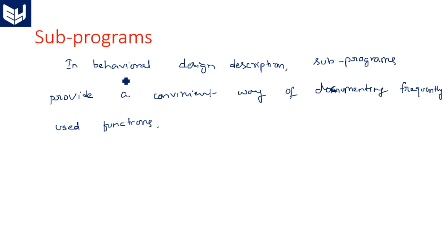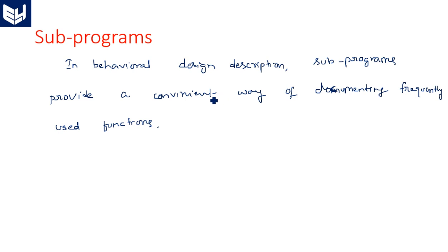In behavioral design description, there are three different descriptions in VHDL: behavioral description, data flow, and structural. Subprograms are used in behavioral description only, not for data flow and not for structural. The programs or functions which are repeatedly used are documented using subprograms.